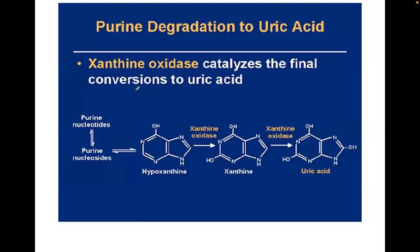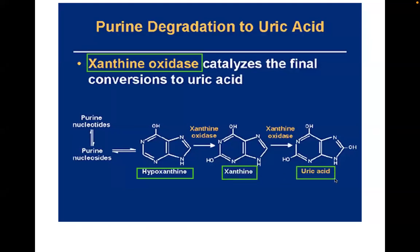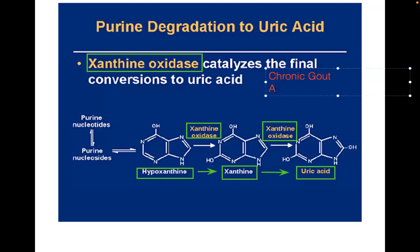Xanthine oxidase catalyzes the final conversion to uric acid: hypoxanthine becomes xanthine, and xanthine becomes uric acid. The common enzyme in both reactions is xanthine oxidase. The drug that inhibits xanthine oxidase, used for the treatment of chronic gout, is allopurinol.